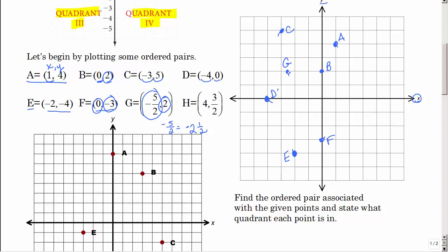We'll label that point G. For point H, convert three halves to a mixed number: two goes into three one time with one left over, so it's one and a half. Go right four and then up one and a half. If fractions are like two-thirds or one-third, just estimate — life isn't always in pretty numbers, so on the coordinate grid we just get as close as we can.